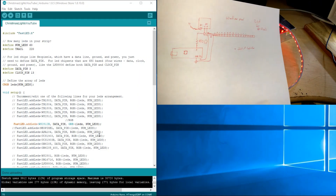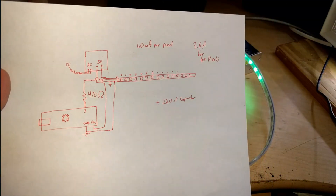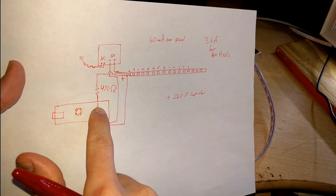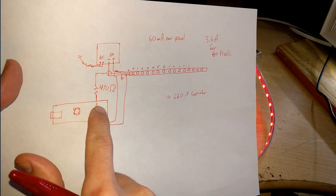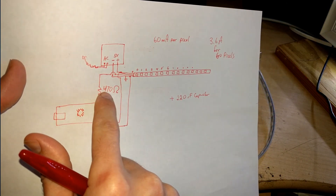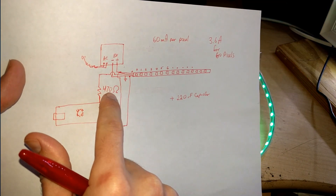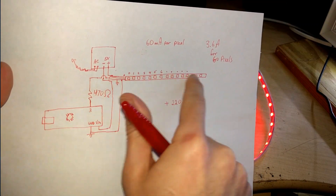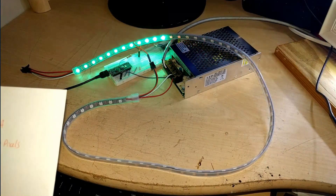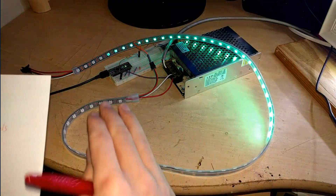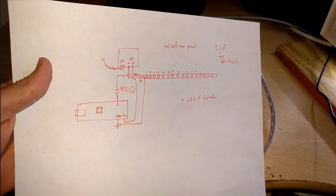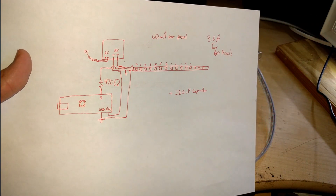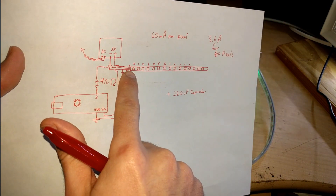First I want to dive in with the schematic. Here's how it's all connected: Arduino pin 3 is connected in series with a 470 ohm resistor to the middle pin, or data pin, of the LED strip. If your LED strip has four pins, don't worry — this code will work with it also.